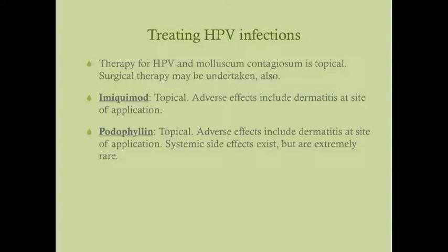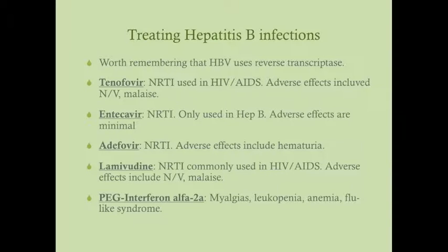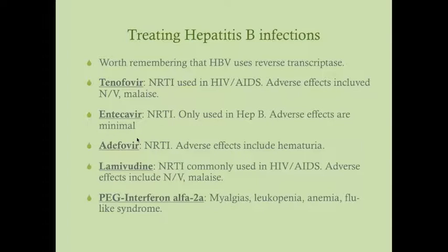Hepatitis B is one of the few viruses that uses reverse transcriptase, the other being HIV. Some antivirals used for hepatitis B are also used for HIV — tenofovir and lamivudine appear in both. Two other hepatitis B drugs, entecavir and adefovir, are also reverse transcriptase inhibitors but don't have great efficacy against HIV, so they're generally used only for hepatitis B.